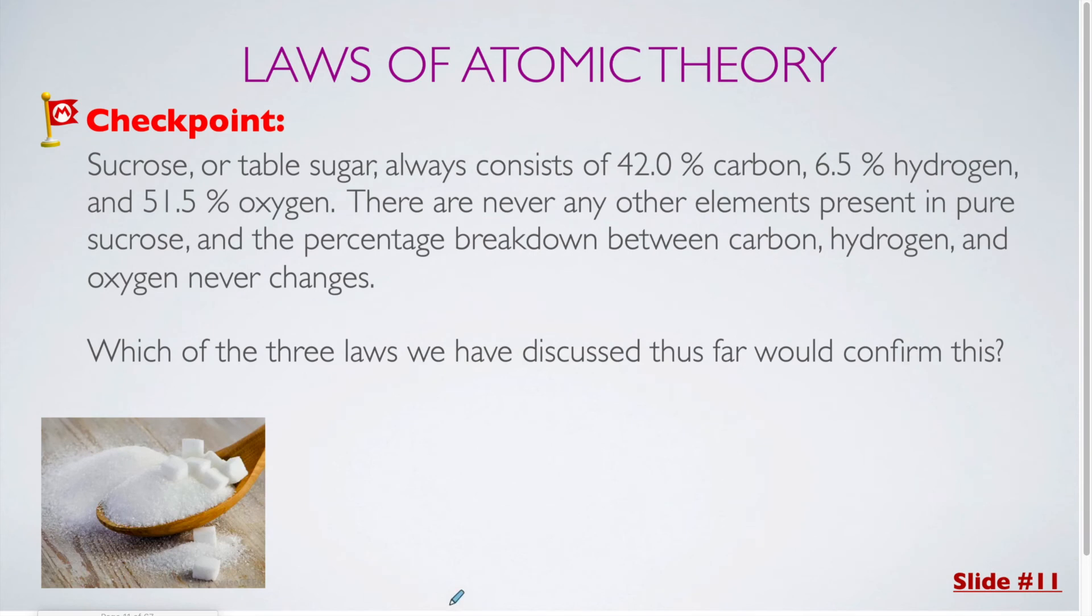For our next checkpoint question. Sucrose, or table sugar, always consists of 42.0% carbon, 6.5% hydrogen, and 51.5% oxygen. There are never any other elements present in pure sucrose, and the percentage breakdown between carbon, hydrogen, and oxygen never changes. Which of the three laws we have discussed so far would confirm this?